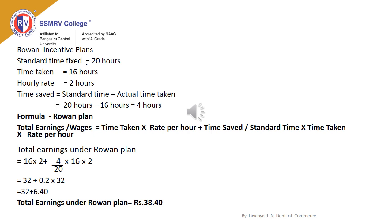Time taken by the worker to complete the job is 16 hours, rate per hour is ₹2, and time saved by the worker is 4 hours, so he is entitled to get a bonus. Standard time is 20 into time taken 16, and rate per hour is ₹2. Simplify the equation: 16 into 2 is 32; 4 divided by 20 is 0.2; and similarly 16 into 2 is 32. The total earnings under the Rowan Plan is ₹38.40.